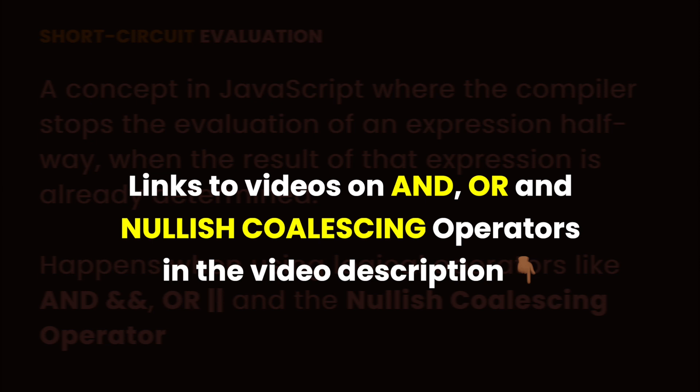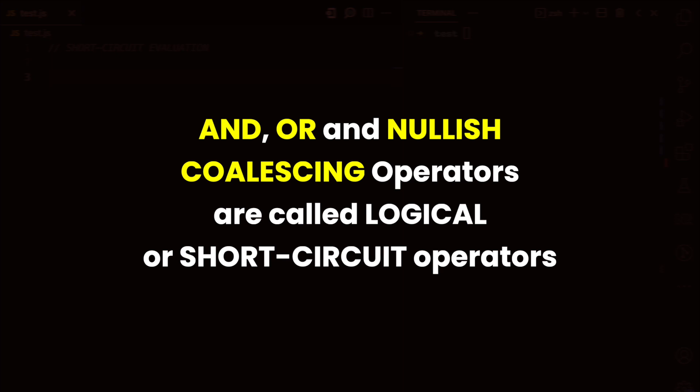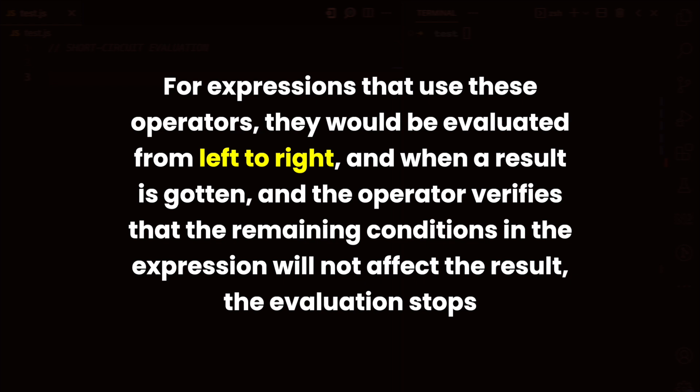If you'd love to learn more about these operators, I have videos on them — I'll leave links in the video description. These are called logical operators, or you can also call them short-circuit operators. What happens when using these operators in an expression is that the compiler evaluates the expression from left to right, and once it achieves the result and verifies that the remaining conditions would not affect it, it skips them, short-circuits, and returns the result immediately.